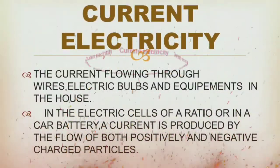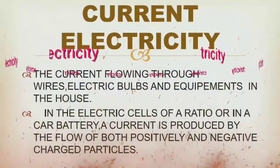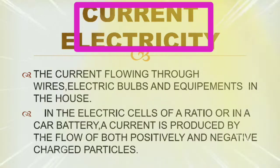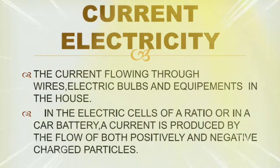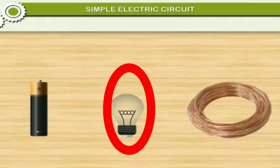Let us see what is current electricity. A large current flow when lightning takes place from a cloud to the ground. While sensation is felt by us due to a microscopically small current flowing to the brain. You are aware of the current flowing through wires, electric bulbs and equipments in the house.